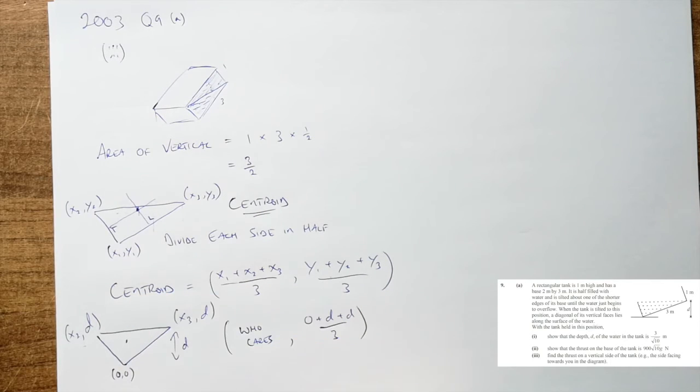So therefore, if we look at our centroid, our centroid is at something 2d over 3. That is the coordinates of it.